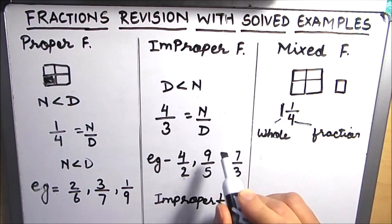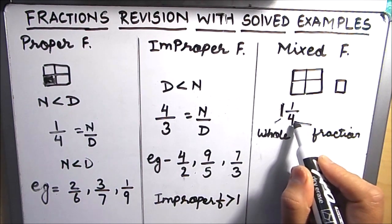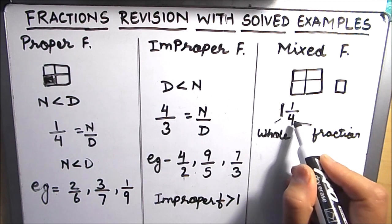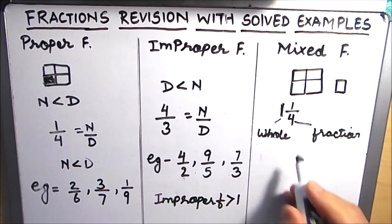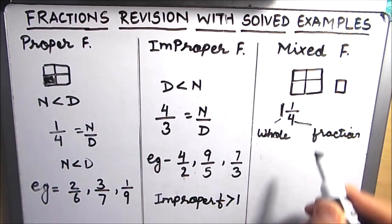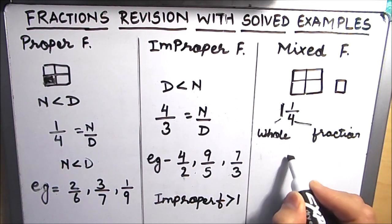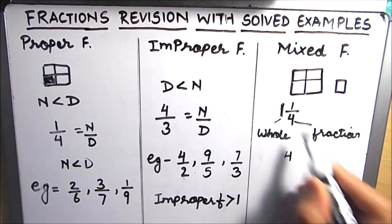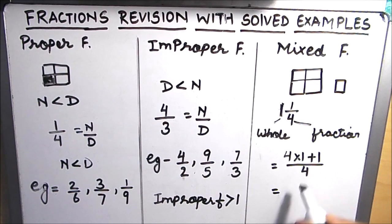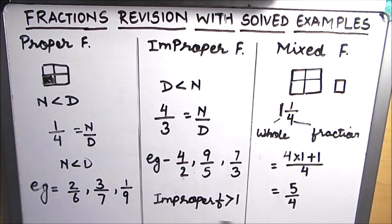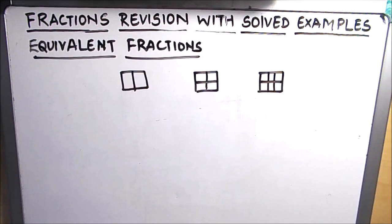We can always change a mixed fraction into an improper fraction by multiplying the denominator by the whole number part and then adding the numerator. For example, to convert this mixed fraction into an improper fraction, we do 4 times 1 plus 1 over 4, which gives us 5 over 4. A mixed fraction is another way of representing an improper fraction.